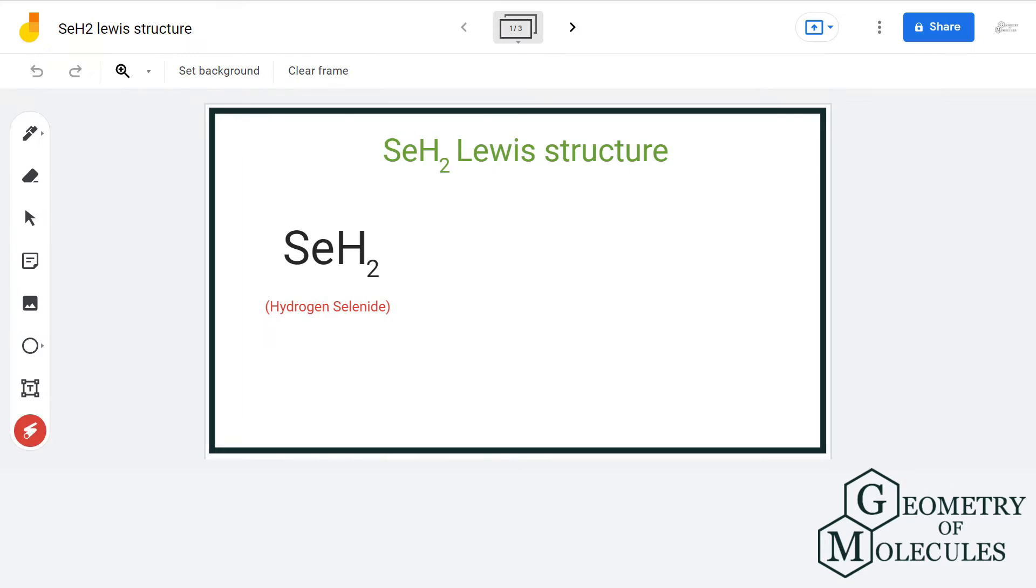Hello guys, welcome back to our channel. In this video, we will discuss the Lewis structure of SeH2, the chemical formula of hydrogen selenide. For drawing the Lewis structure, let us count the total number of valence electrons.